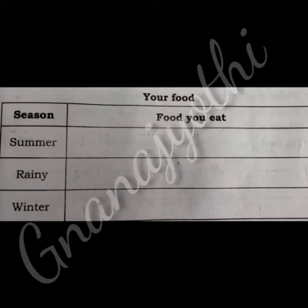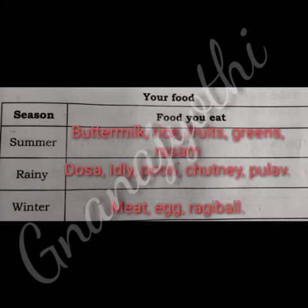Today's topic: seasons and the food you eat. Children, in summer season we eat buttermilk, rice, fruits, greens, and rasam. In rainy season: dosa, idli, pori, chapati, and pulao. In winter season: meat, egg, and ragi ball. Understood, children?